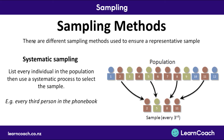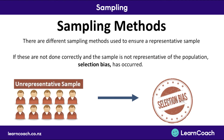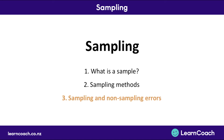Finally, systematic sampling is where you list every individual in the population then use a systematic process to select a sample — you make a rule and use it to pick who you choose, for example every third person in the phone book. If these methods aren't done correctly and the sample isn't representative of the population, selection bias has occurred, which may mean the results aren't accurate.